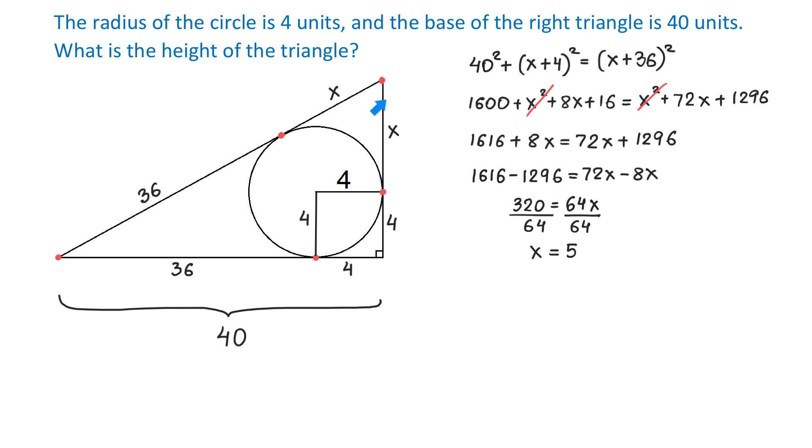Now once we found that x equals 5, we will add 5 and 4 to get the height of the triangle. Then the height of the triangle is 5 plus 4, which makes 9 units. I hope you liked this solution. Please subscribe and thank you for watching!